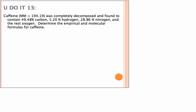They do take a bit of space, and I like to work mine from left to right. So I have these values: 49.48% carbon, 5.20% hydrogen, 28.86% nitrogen, and then it simply says the rest is oxygen.